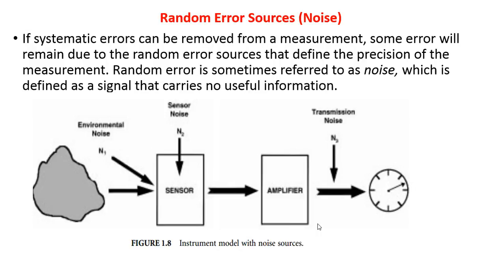Error due to parallax: suppose you have a meter rule — instead of looking at it directly, you look from an angle. Instead of reading 6.3 you might see 6.4 or 6.2 because you are looking from the wrong angle, or because light reflection causes a wrong reading. These are errors due to parallax.